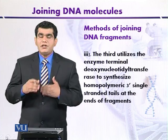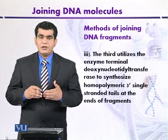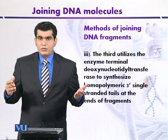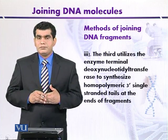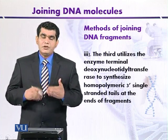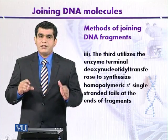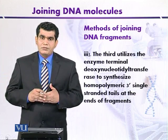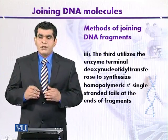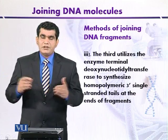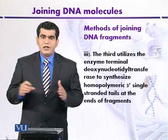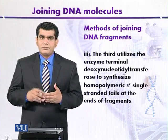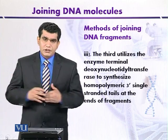The third method depends upon the ability of terminal deoxynucleotidyl transferase, commonly also called terminal transferase. This enzyme introduces homopolymer tails at the 3' ends of the DNA fragment. Homopolymer tailing means the tails contain a single type of residue at the 3' ends — for example, either adenine, guanine, cytosine, or thymine. How this is possible will be discussed after some time.